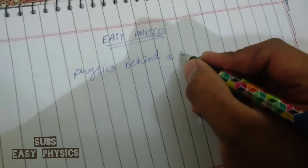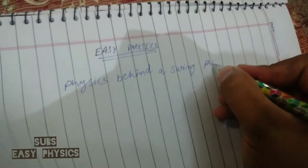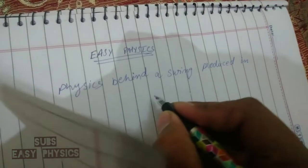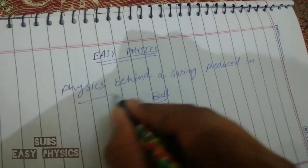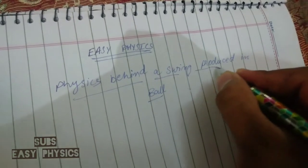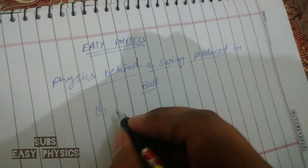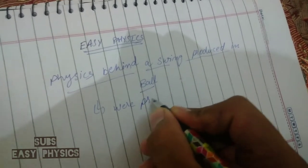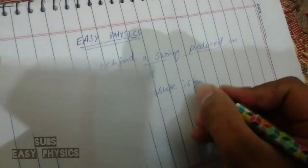The physics behind a swing produced in a ball is proved by Bernoulli's equation, where pressure is high the speed is slow and vice versa.